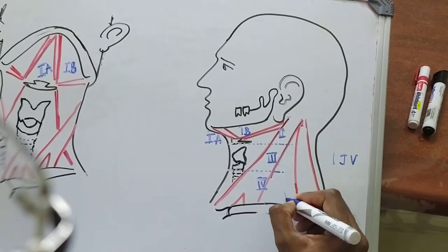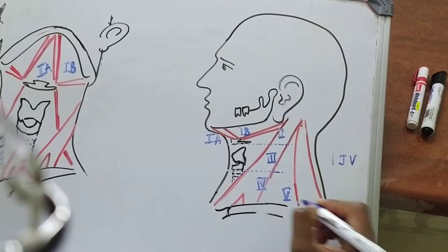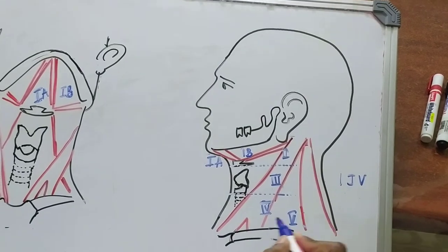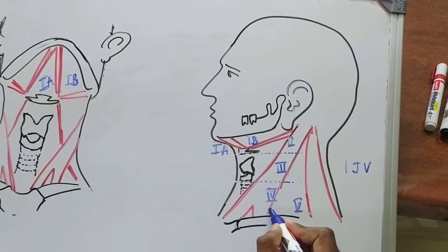Then are the level 5. Level 5 is the posterior group of lymph nodes that are bounded posteriorly by the trapezius muscle, anteriorly by the sternocleidomastoid muscle.